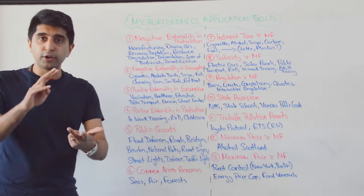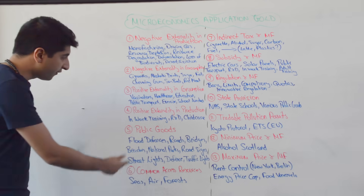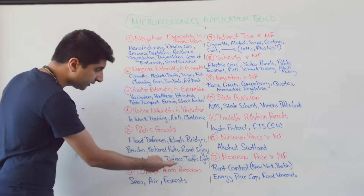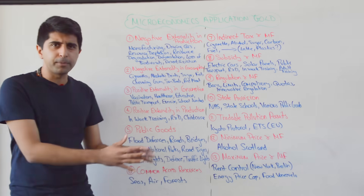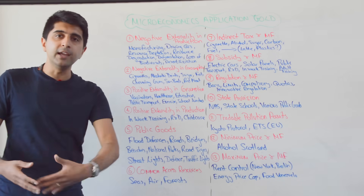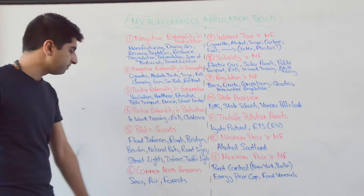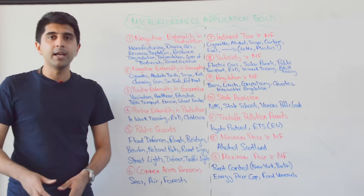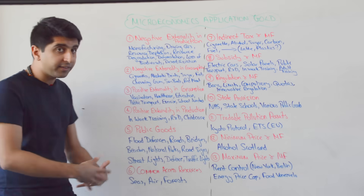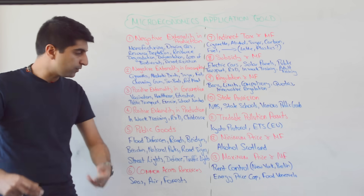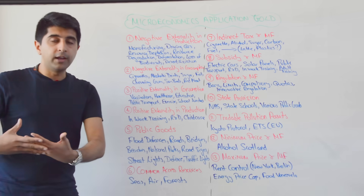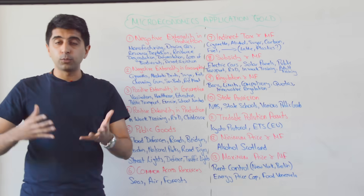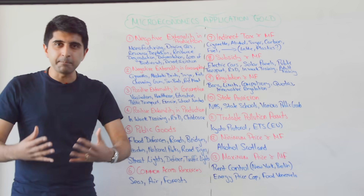Public goods are non-excludable and non-rival. Really good examples: flood defences, roads, bridges, beaches, national parks, road signs, street lights, defence, traffic lights — loads of examples, all government-provided in the UK. And common access resources — where there is no private ownership at all: the resources that the seas provide, minerals, seafood, the air and oxygen, forests. We think about resources we get when we cut down trees — timber, pulp.